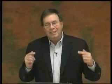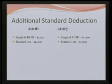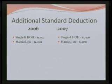Another item that has changed is the additional standard deduction, which applies to taxpayers who are 65 years or older or blind. For a single taxpayer or head of household, the additional standard deduction was $1,250 in 2006 and has been bumped up to $1,300 in 2007. For married filing jointly, surviving spouse, etc., the amount has been bumped up to $1,050. So an elderly or blind taxpayer gets not only the basic standard deduction but also this additional standard deduction on top of it.